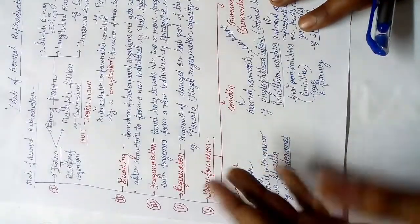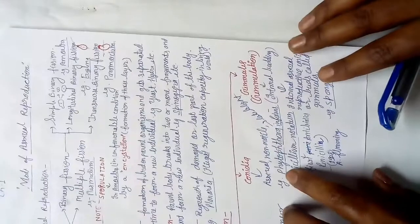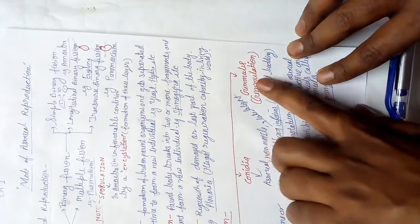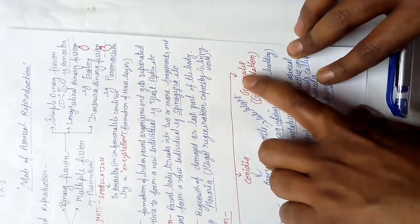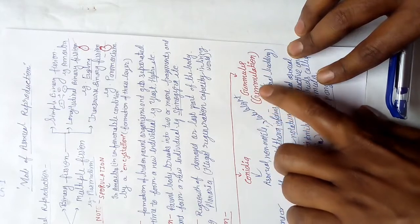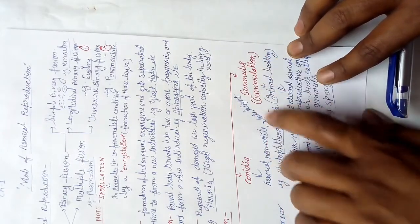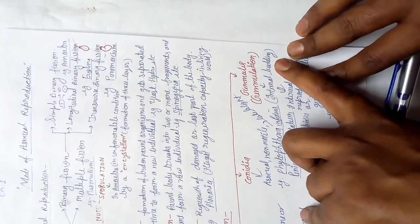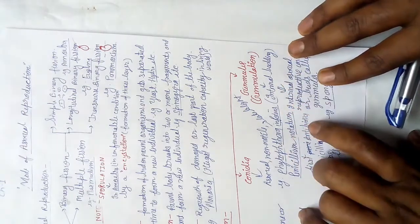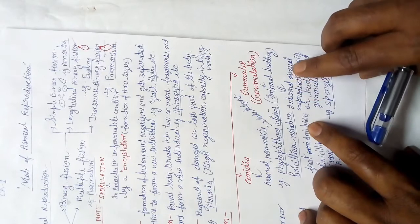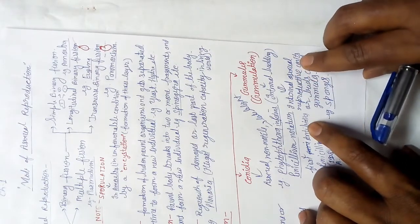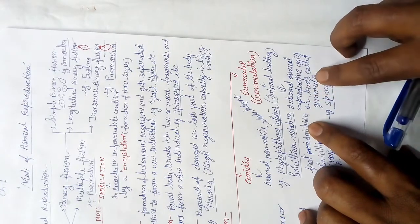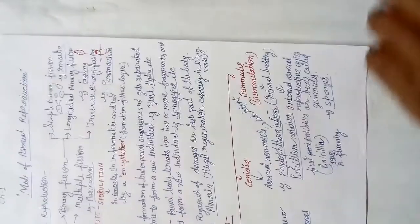Next is gemmules. A gemmule is a structure, and its formation by a process is known as gemmulation. Gemmulation is also known as internal budding. Internal asexual reproductive units are buds called gemmules. The example is sponge — all members of Porifera are known as sponges.